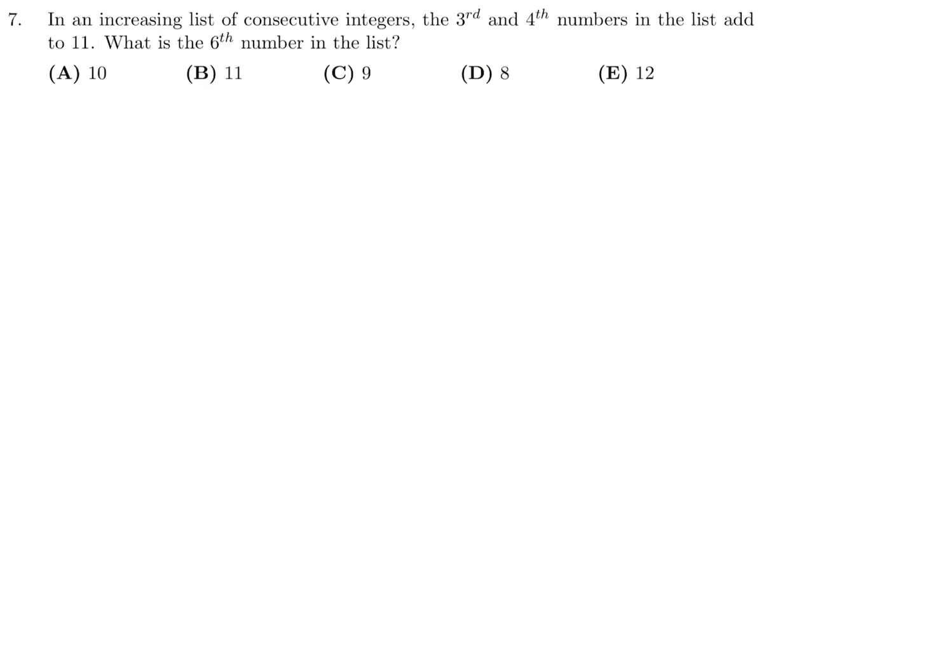In an increasing list of consecutive integers, the third and fourth numbers in the list add to 11. What is the sixth number in the list? So we have a bunch of numbers, and let's say this is the third, this is the fourth, fifth, and sixth. The third and fourth add to 11. So what two consecutive numbers add up to 11? And the answer is 5 and 6.